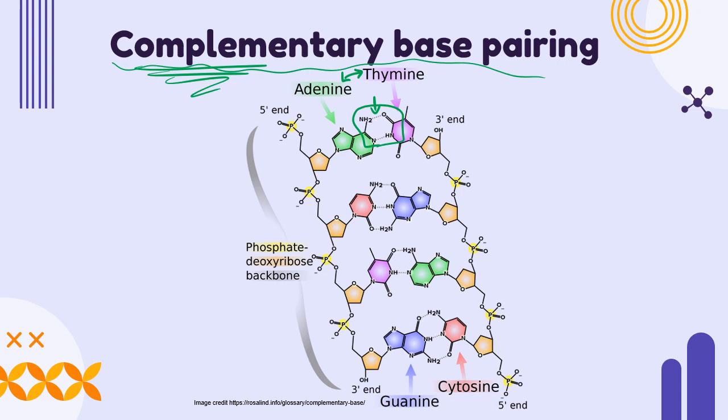The same thing happens with cytosine and guanine. Their shapes allow these hydrogen bonds to form. This specific base pairing allows us to make beautiful copies of DNA during cell division and to use the DNA code to make perfect messenger RNA strands so we can make proteins.